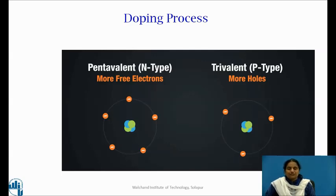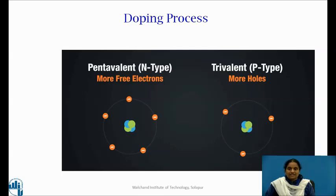Manufacturers control the conductivity of a doped semiconductor through the amount of impurity atoms added. A semiconductor can be lightly or heavily doped. Lightly doped semiconductors have high resistance while heavily doped semiconductors have low resistance. But with careful manipulation of how semiconductor materials of different types interface and the application of voltage in specific ways, the resistance can be further increased or decreased.